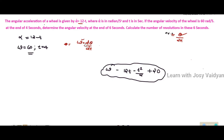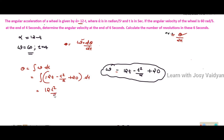We integrate the omega equation. The integral of 12t gives 6t squared, the integral of minus t squared divided by 2 gives minus t cubed divided by 6, and the constant 20 integrates to 20t, plus constant C2.